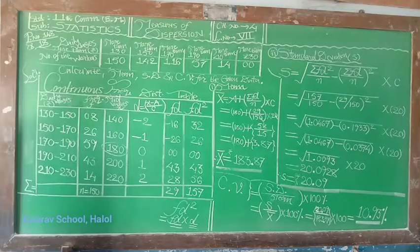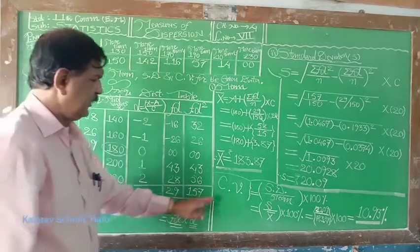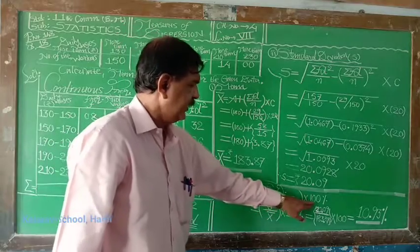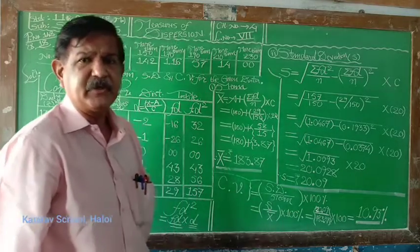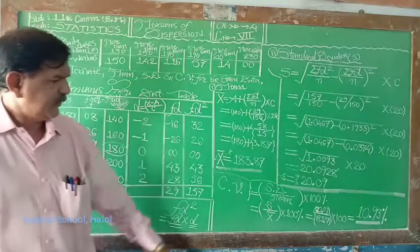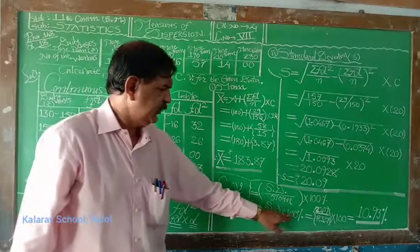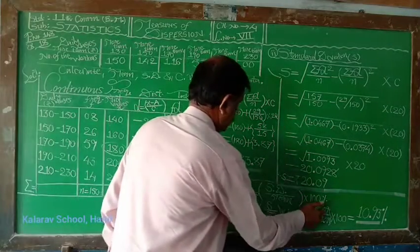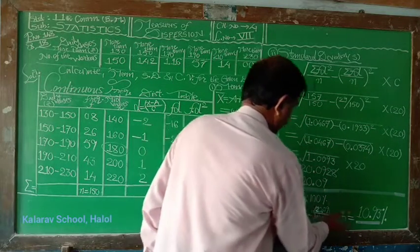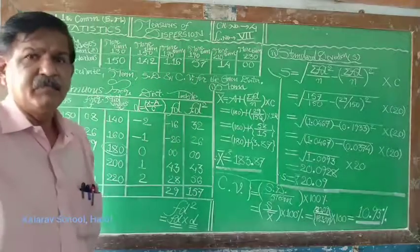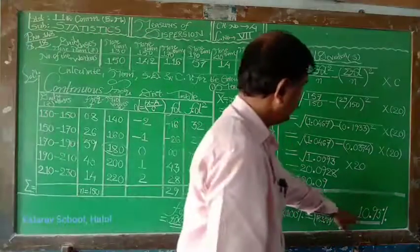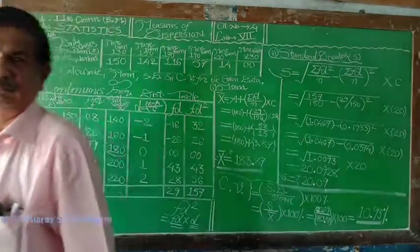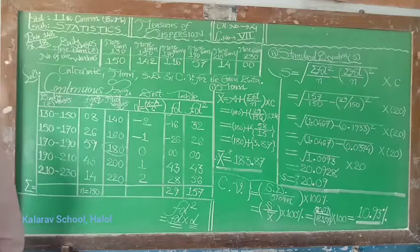Now CV. The coefficient of variation is given by standard deviation upon mean into 100 and always it is measured in terms of percentage. s upon x bar into 100. s means 20.09 upon 183.87 into 100. The answer is 10.93%.